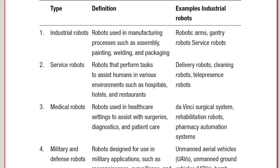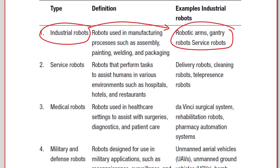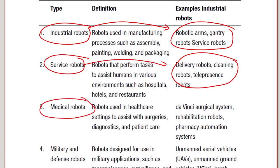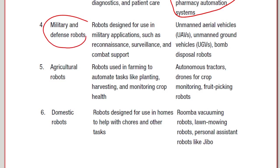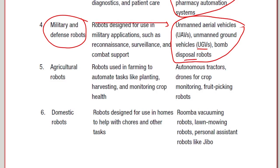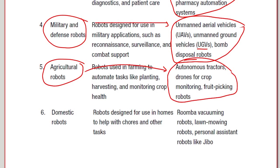Let me show you different types of robots and examples. Industrial robots include robotic arms, gantry robots. Service robots do delivery jobs, cleaning, and telepresence. Medical robots include the Da Vinci surgical system, rehabilitation robots and pharmacy automation systems. Military and defense robots include UAVs (unmanned aerial vehicles), unmanned ground vehicles and bomb disposal robots. Agricultural robots include autonomous tractors, drones for crop monitoring and fruit-picking robots. Domestic robots include the Roomba vacuuming robot, lawn-mowing robots and personal assistant robots like Jibo.